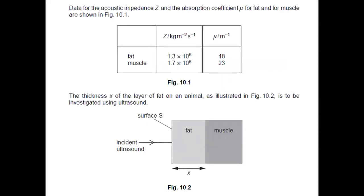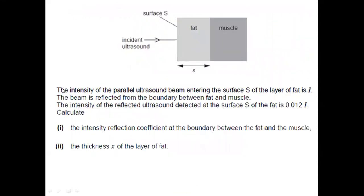For this problem, we have the data for the acoustic impedance Z and the absorption coefficient mu for fat and for muscle. Also, the thickness of the layer of fat on an animal, as given in the illustration, will be investigated using ultrasound. The intensity of the parallel ultrasound beam entering surface S of the layer of fat is I. The beam is reflected from the boundary between the fat and muscle. The intensity of the reflected ultrasound detected at the surface S of the fat is 0.012i. We are asked to calculate the intensity reflection coefficient at the boundary between the fat and the muscle, as well as the thickness of the layer of fat.